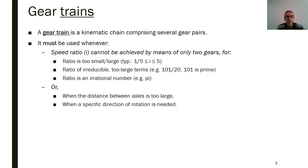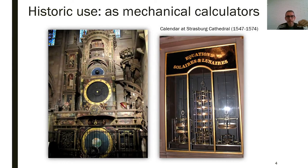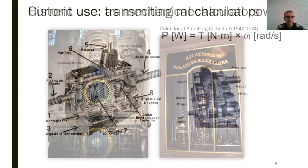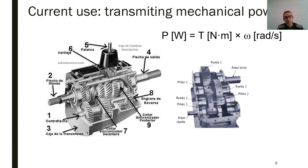Also, when a specific direction of rotation is needed: a single pair of externally connected gears inverts the direction of rotation. If we need the direction not to be inverted, we need two consecutive pairs of gears. Historic use of gear trains has been mostly for mechanical calculators or clocks — for example, in the beautiful clock in the cathedral of Strasbourg. But nowadays, they are used in mechanical engineering mostly for transmitting mechanical power.